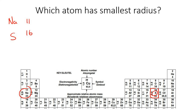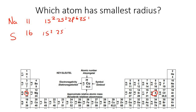You only look at the number of energy levels when you go down a group. When you go across a period, you look at the number of protons. Na has 11 protons and sulfur has 16.